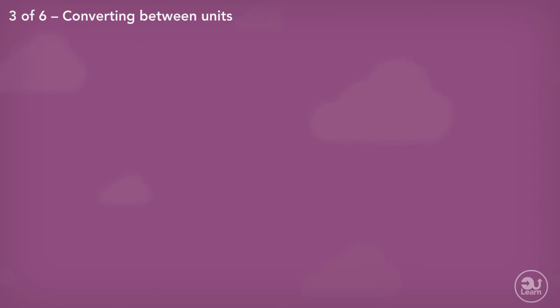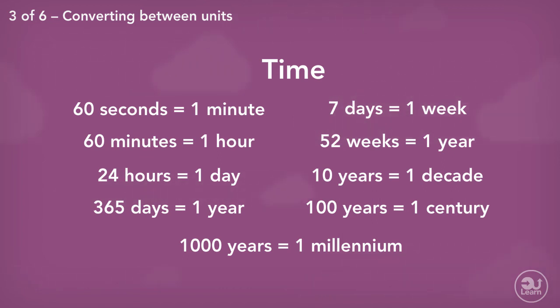The only measurement that has a unique relationship with its different units is time. 60 seconds is equivalent to 1 minute. 60 minutes is equivalent to 1 hour. 24 hours is equivalent to 1 day. 365 days is equivalent to a year. 7 days is equivalent to a week. There are approximately 52 weeks in a year.